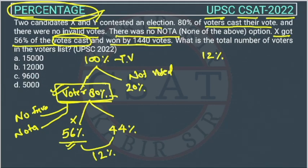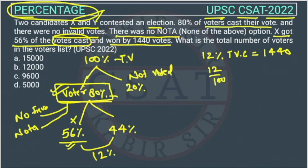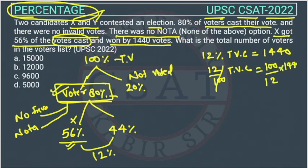So 12% of total votes cast is equal to 1440 votes. We can write this as: 12% of total votes cast = 1440. Solving this, the total votes cast comes out to 12,000.